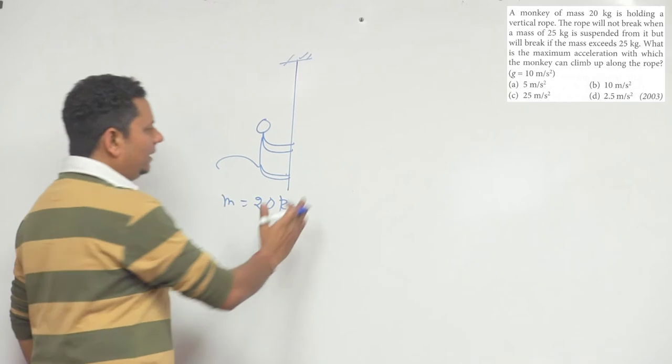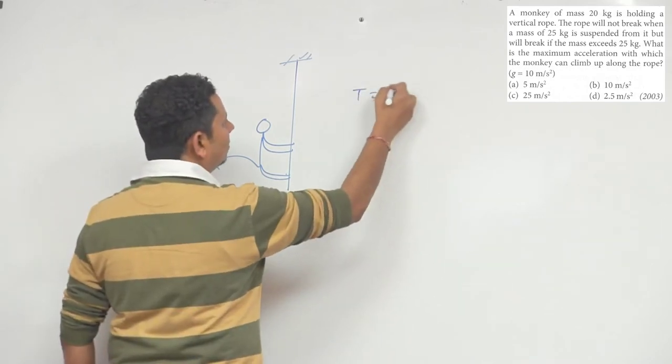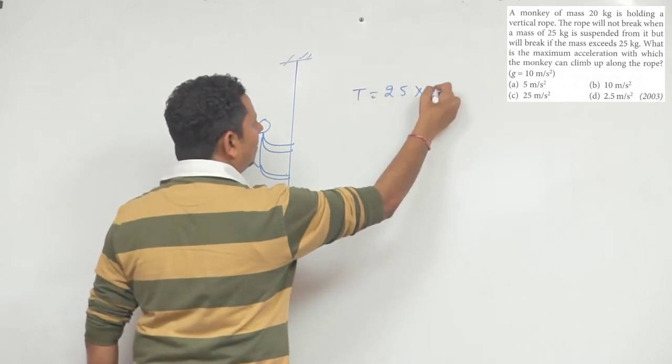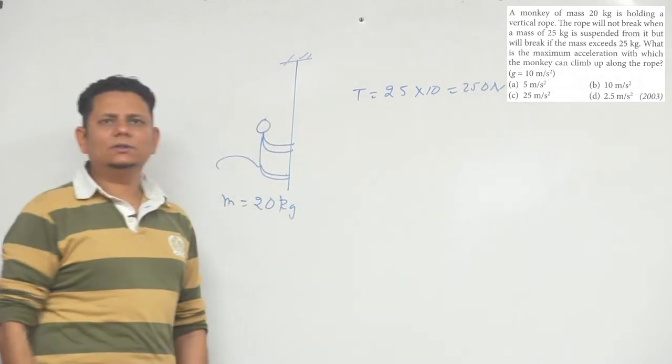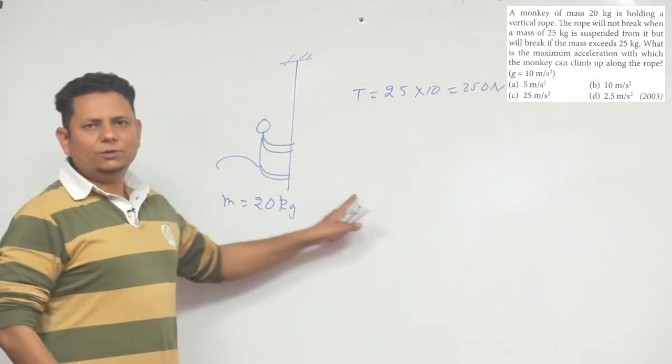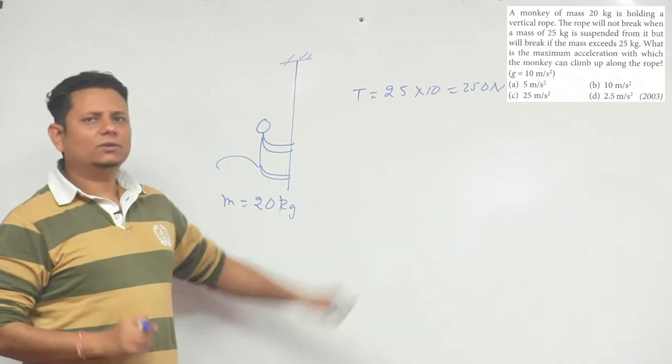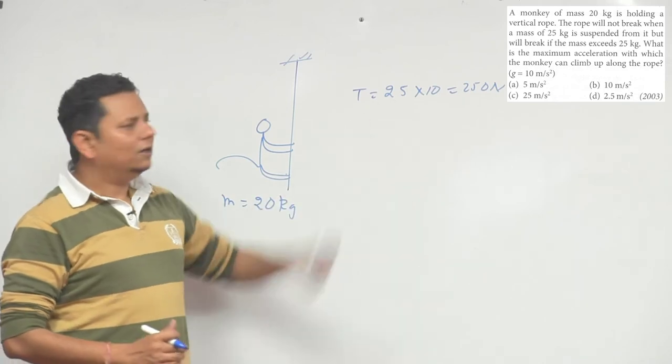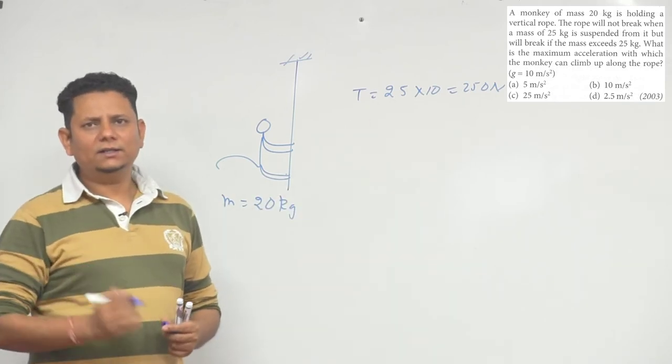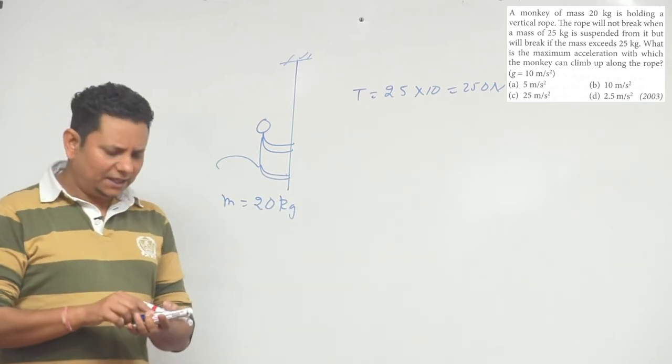The tension at which the rope can break is equal to 25 multiplied by 10, that is equal to 250 newton. So maximum tension which is given, if we have 25 kg, then the rope will break. The tension maximum is mg, so maximum 250 newton is allowed.